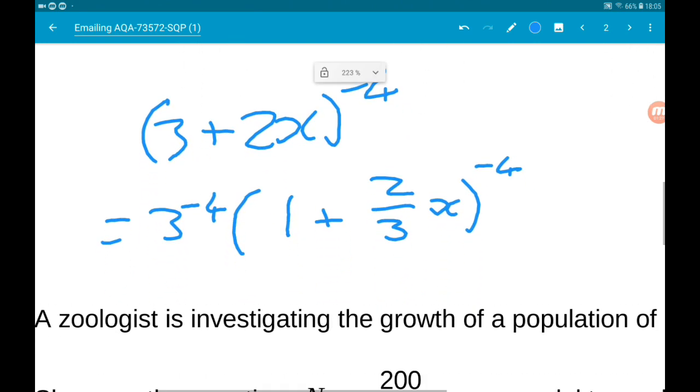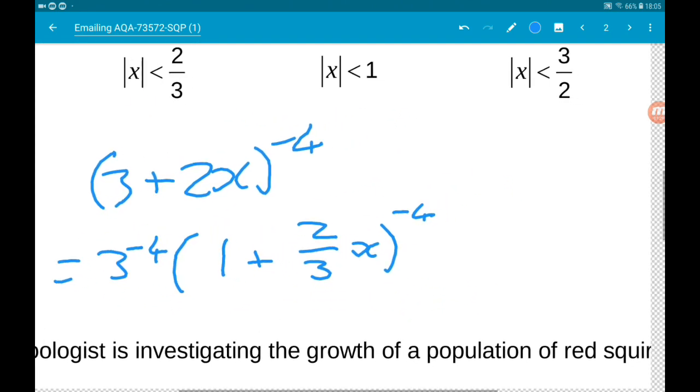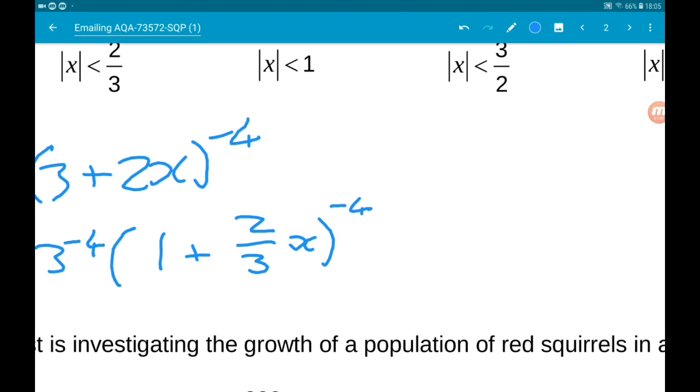So now we can compare this to the expansion. Even though we don't have 1 plus x, we do have that 1. So because we've got 2 thirds x, we know that 2 thirds the modulus of x is less than 1.